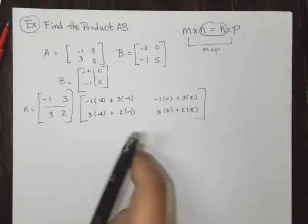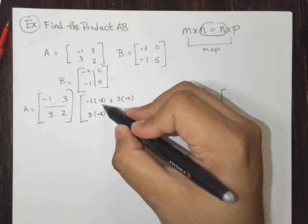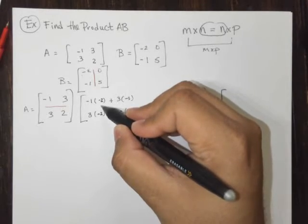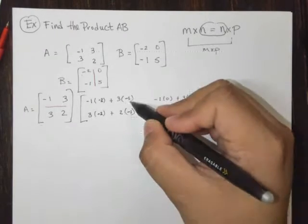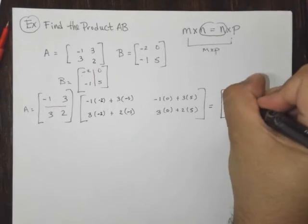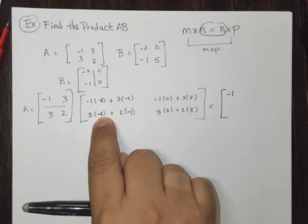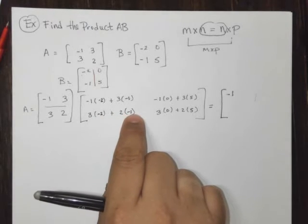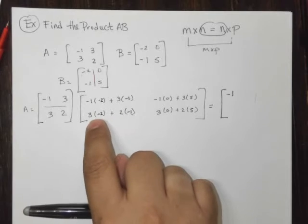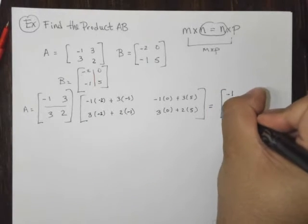So let's see here. We're going to get negative 1 times negative 2 is positive 2. And 3 times negative 1 is negative 3. So that's 2 minus 3, which is negative 1. Then we have here 3 times negative 2, which is negative 6. And 2 times negative 1, which is negative 2. So negative 6 plus a negative 2 is a negative 8.